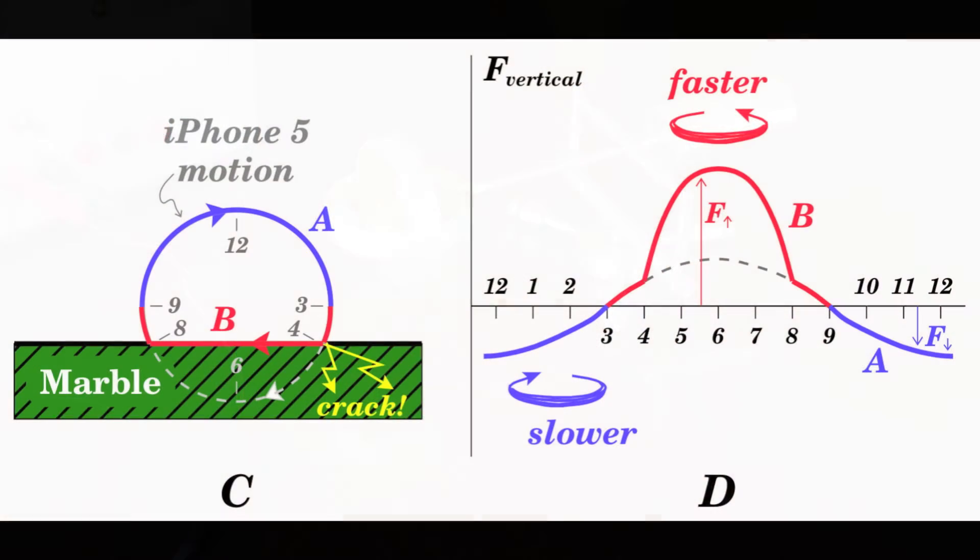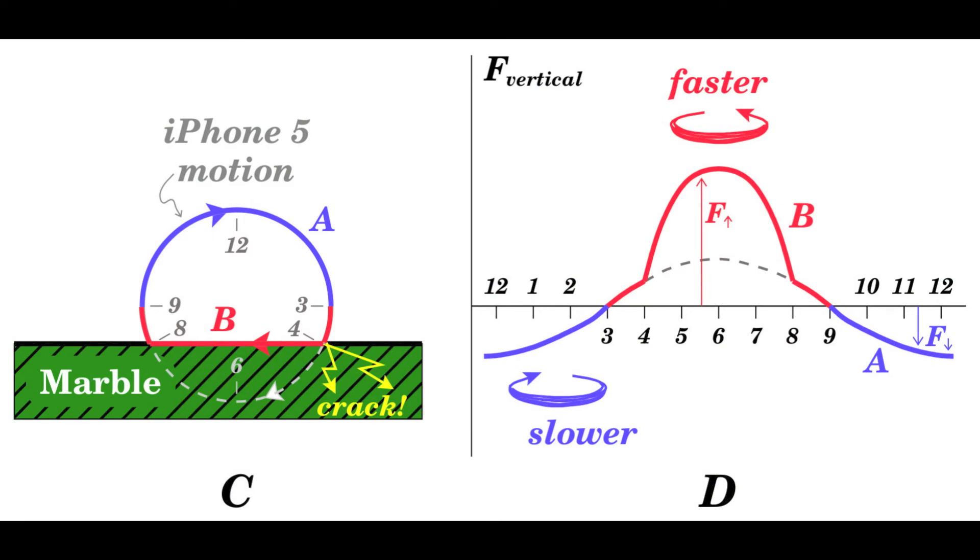So why doesn't the precession in one direction cancel out the precession in the other? Why does the phone rotate?